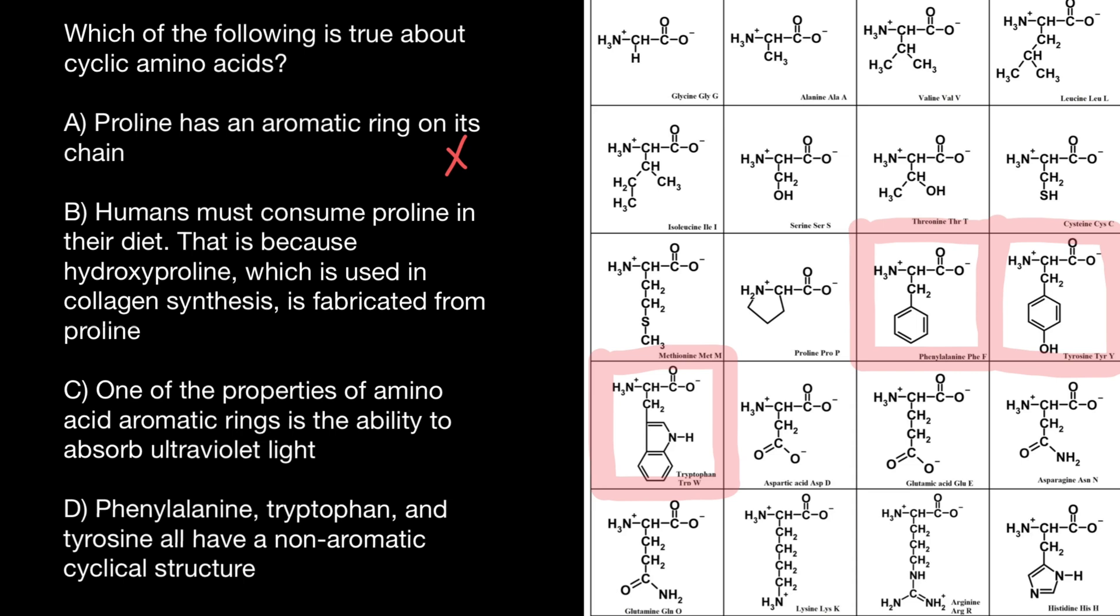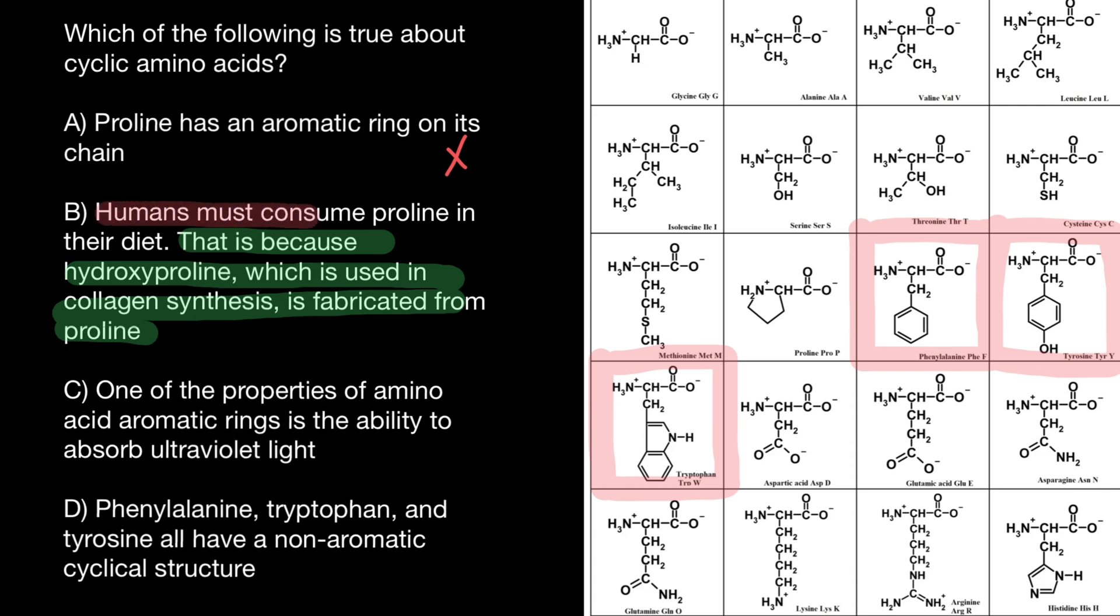And next statement, humans must consume proline in their diet, that's because hydroxyproline, which is used in collagen synthesis, is fabricated from proline. In green color, I want to highlight a statement which is correct. So only part of the statement is correct. It is true that hydroxyproline would be produced using a substrate, proline, which is important in collagen synthesis. But humans shouldn't consume proline in their diet because we can make proline ourselves.